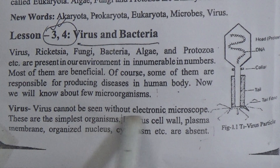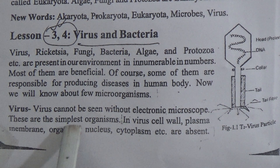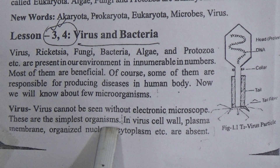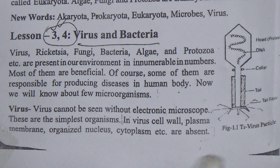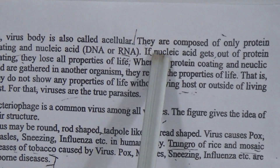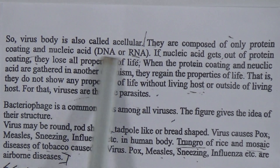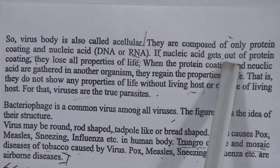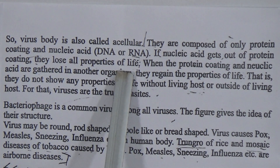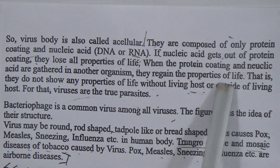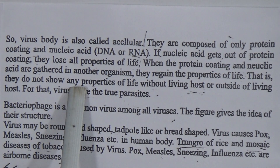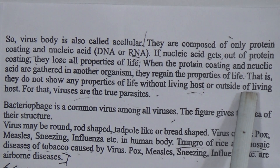Virus: viruses cannot be seen without an electronic microscope. These are the simplest organisms. They lack cell wall, plasma membrane, organized nucleus, and cytoplasm. You can see here the T2 virus — this is one of the first viruses. The virus body is also called a virion. They are composed of only protein and nucleic acid — DNA or RNA. If the nucleic acid is removed from the protein coat, they lose all properties of life. When the protein and nucleic acid are gathered inside another organism, they retain the properties of life. That is, viruses do not show any properties of life outside a living host.